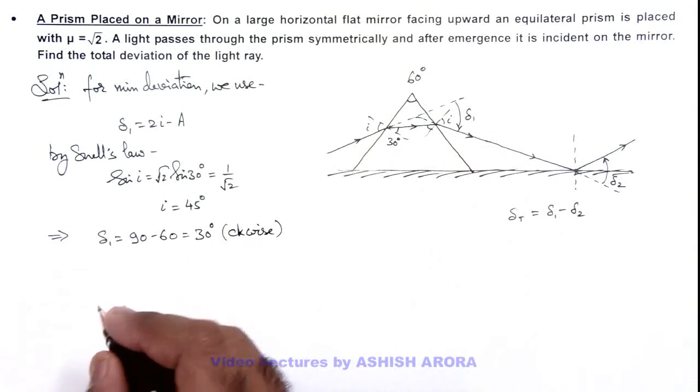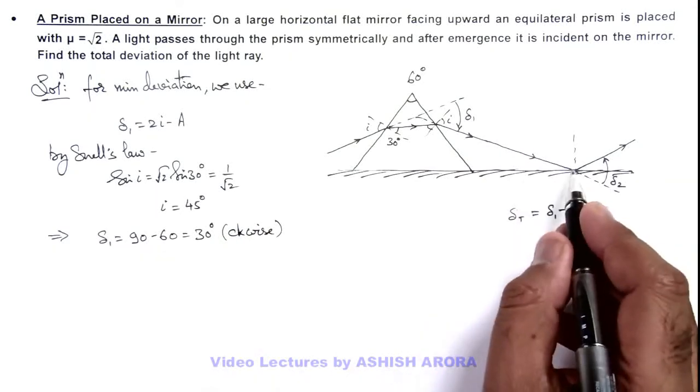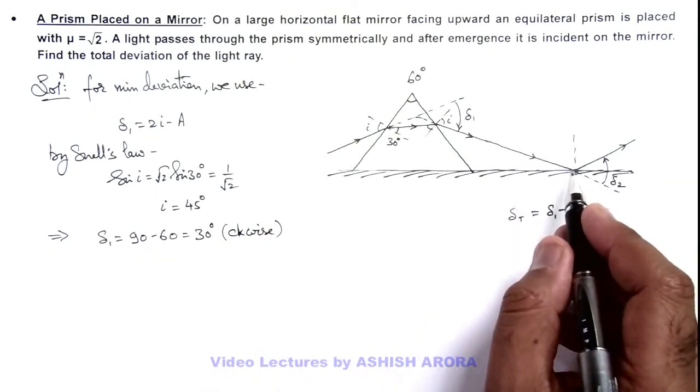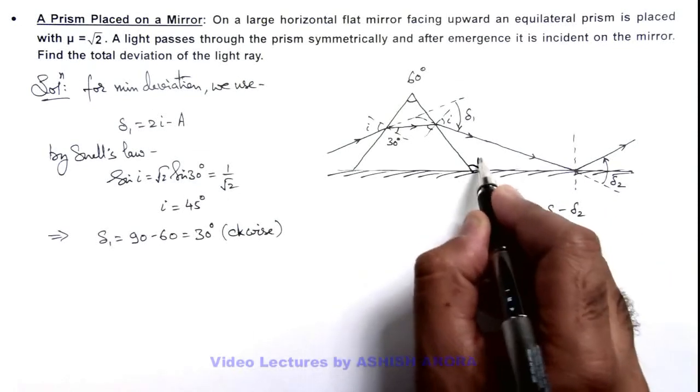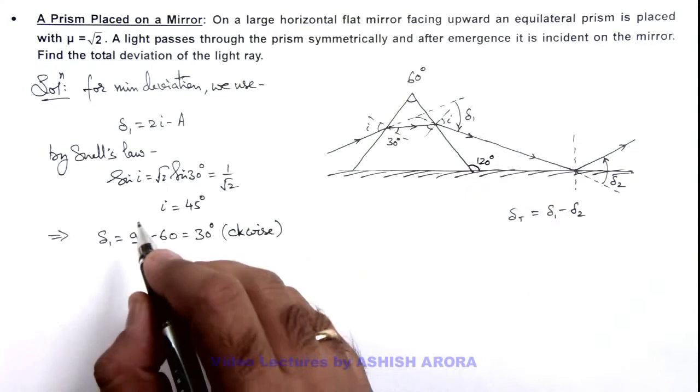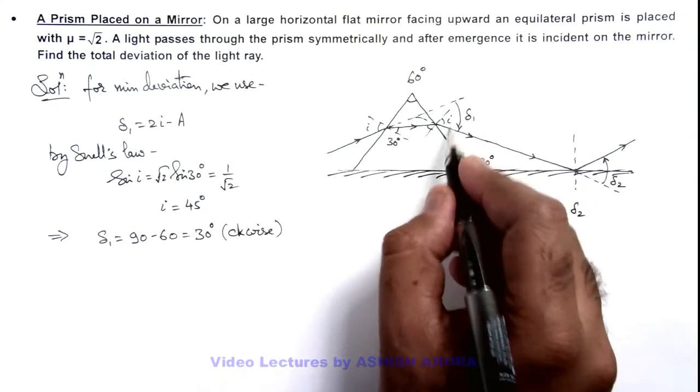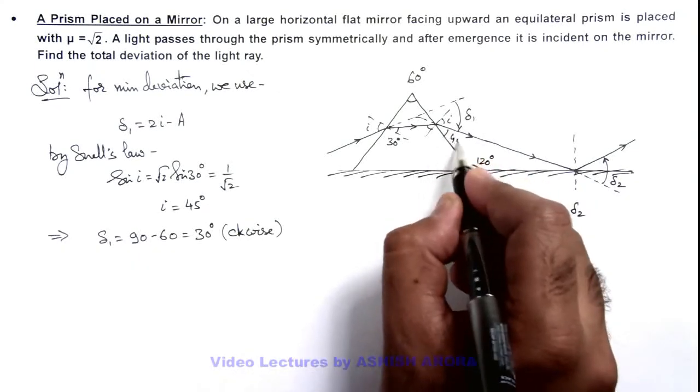And when light is incident on the plane mirror, here we can see this angle here is 120 degrees. If i is 45 degrees, this angle is also 45 degrees.